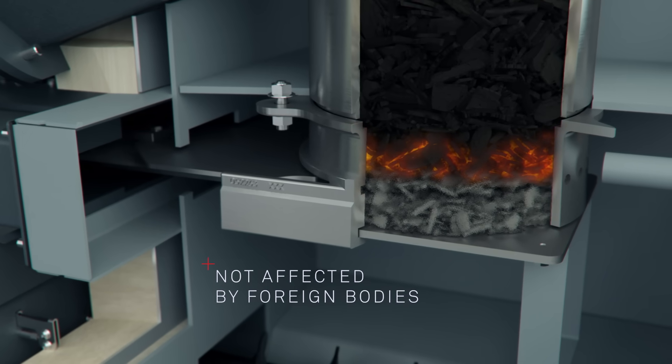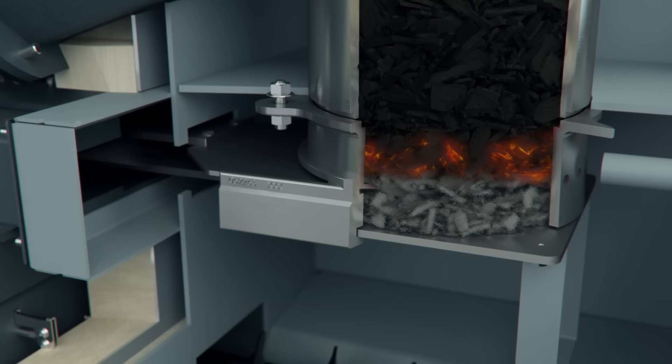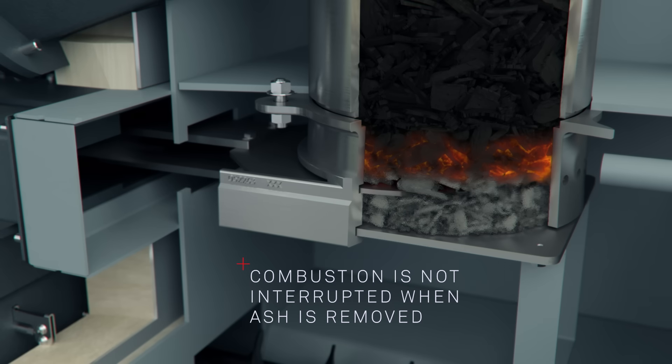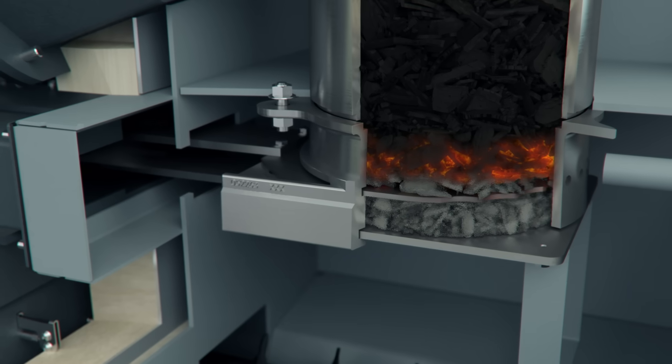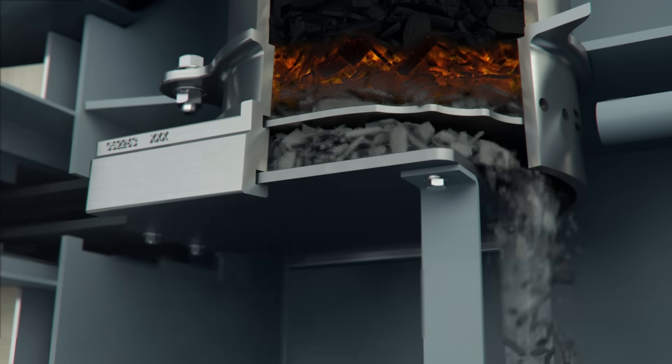The overlying ember bed slide simply has to be moved into the combustion chamber and removes the ash from the ember bed. The embers are retained and combustion is not interrupted. The underlying ash removal plate then opens.